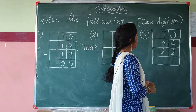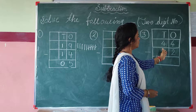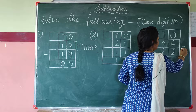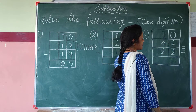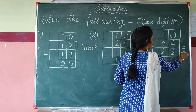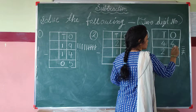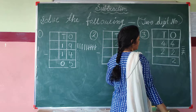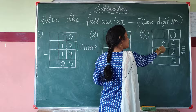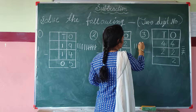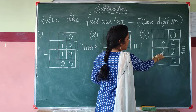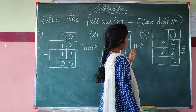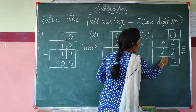Children, next question. This is number 44 minus 22. The 1's place digit is 4, so we draw 4 lines: 1, 2, 3, 4. How many do we subtract? 2. We cut 2 lines. 4 minus 2 — what is the answer? 2. We write 2 here. Now the 10's place digit is 4. We draw 4 lines: 1, 2, 3, 4. We cut 2 lines: 1, 2. 4 minus 2 — how many lines remain? 2. So our answer is 2.